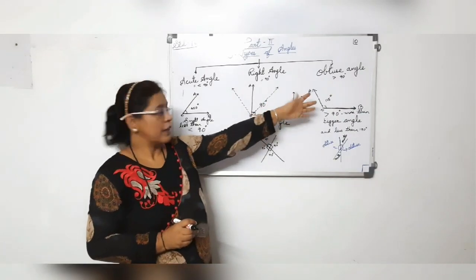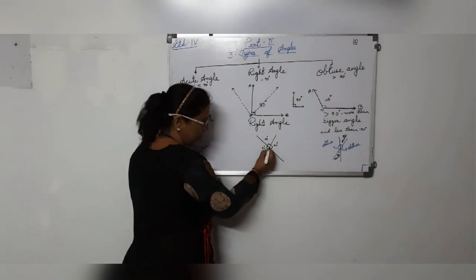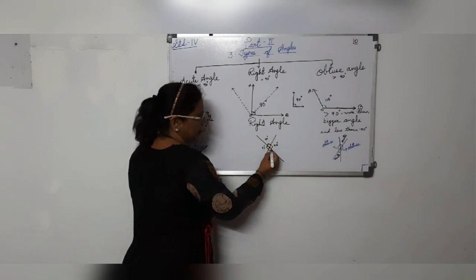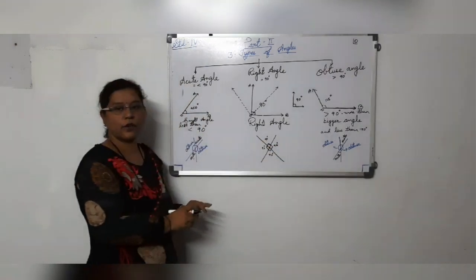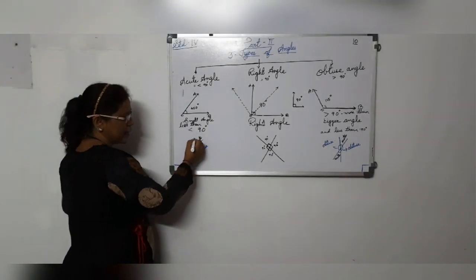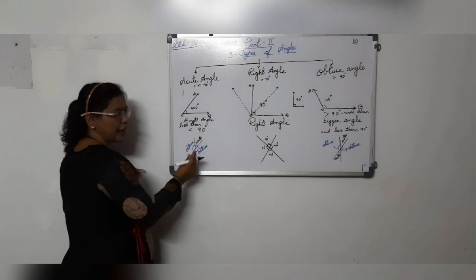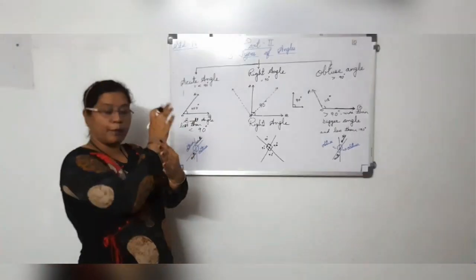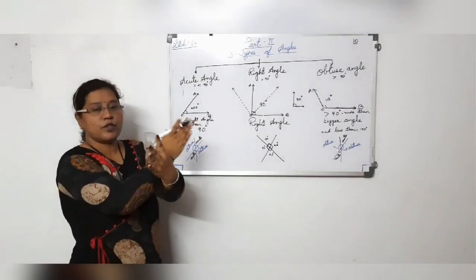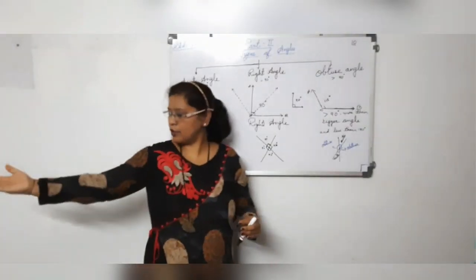Angle is always measured in degrees, which you will learn more about in higher classes. If I draw two line segments that intersect at one point, a right angle is always 90 degrees. If the opening of the lines is smaller than 90 degrees, it forms an acute angle. If the opening of two arms is more than 90 degrees, it is an obtuse angle.